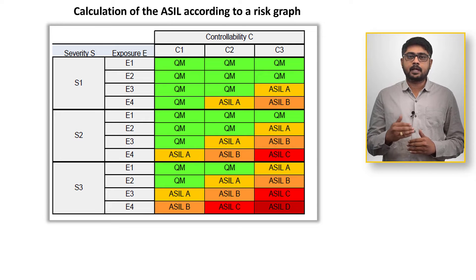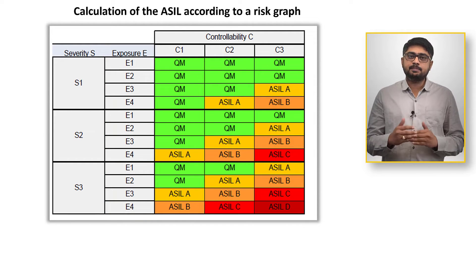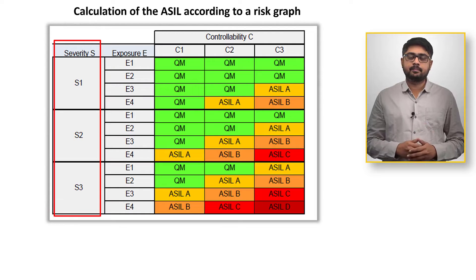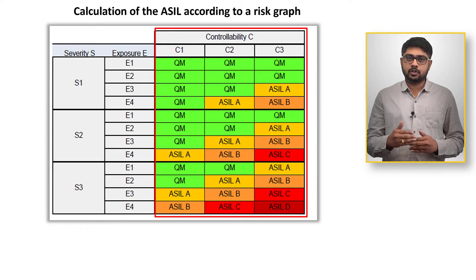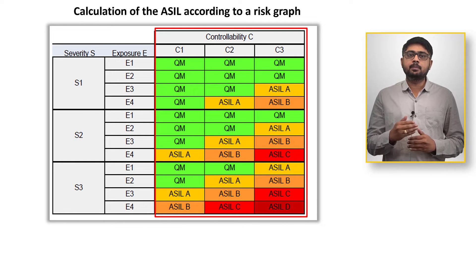The Exposure parameter is determined by evaluating the frequency or relative duration of each situation. The S parameter, which is severity, is assessed by rating the potential injuries resulting from accidents. The C parameter, which is controllability, is determined by examining the chances of the driver or individuals being able to prevent the occurrence of an accident.